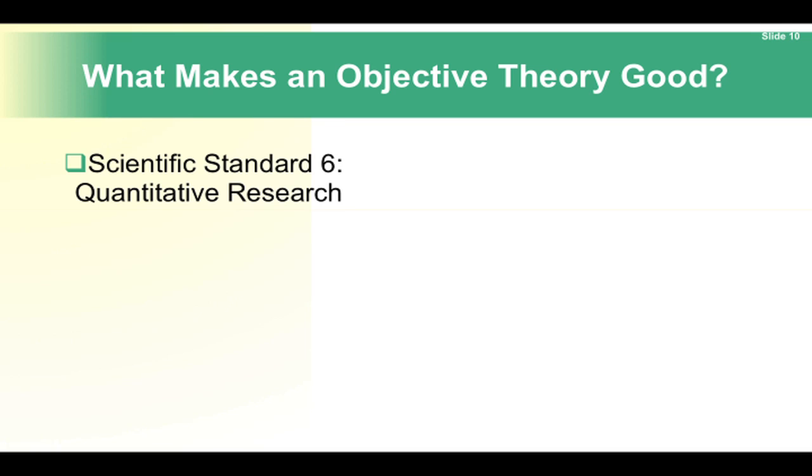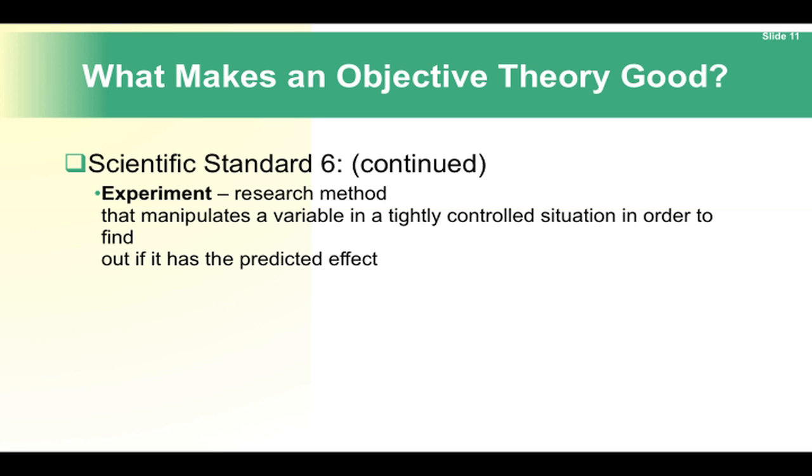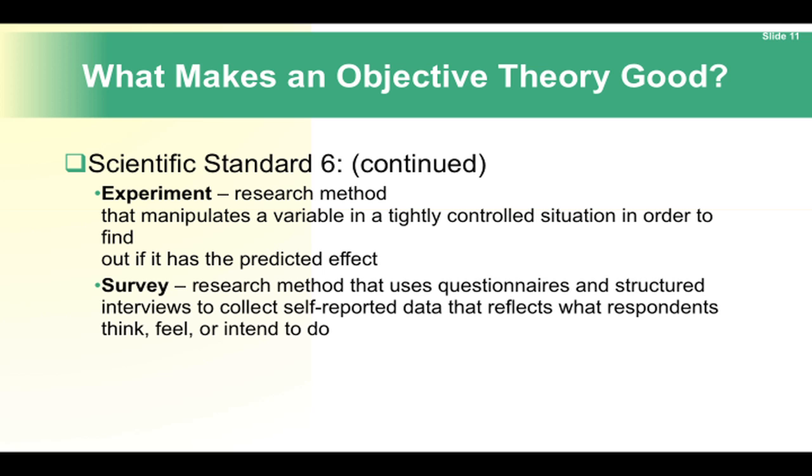Scientific Standard 6: Quantitative research. Most scientific research depends on a comparison of differences. An experiment is a research method that manipulates a variable in a tightly controlled situation in order to find out if it has the predicted effect. A survey is a different research method. This research method uses questionnaires and structured interviews to collect self-reported data that reflects what respondents think, feel, or intend to do.